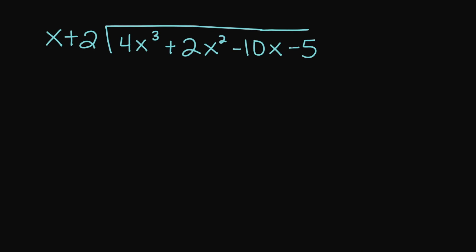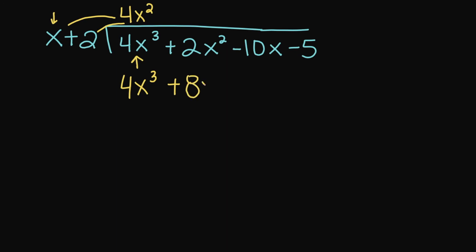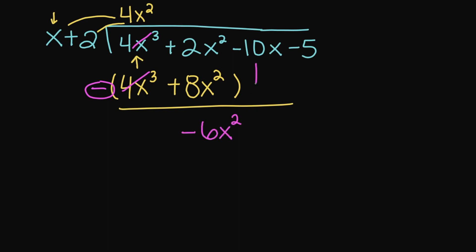Let's try this example. What number do I need to multiply my x with that's going to give me 4x cubed? That's going to be 4x squared, because 4x squared times x gives us 4x cubed. Then 4x squared times 2 gives us a positive 8x squared. Always remember to line up your variables. Now we subtract — remember this negative applies to all terms inside your parentheses. So 4x cubed minus 4x cubed cancels out, and then 2x squared minus 8x squared gives us negative 6x squared. I'm going to bring down my negative 10x and negative 5.